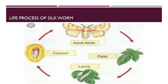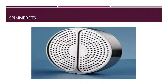When the silk worms are about twenty-five days old, they become ten thousand times heavier than their first stage. They are now ready to spin a silk cocoon.